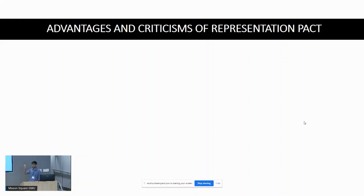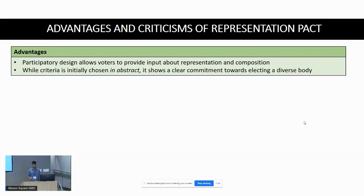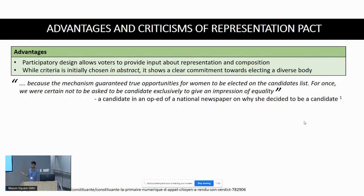Having conducted this case study, we identified advantages and received criticisms. In terms of advantages: first, there is a participatory design idea behind asking voters for input about representation even before asking which candidates they want. Second, although the criteria were chosen in the abstract, they represented a clear commitment toward electing a diverse body before phase two. A candidate stated in an op-ed in a national newspaper that she decided to run because the mechanism guaranteed true opportunities for women to be elected.